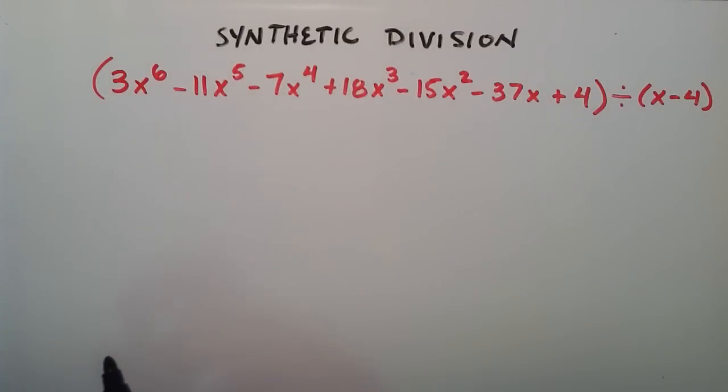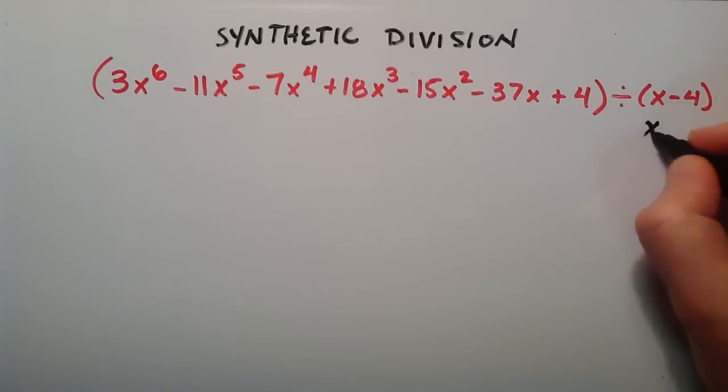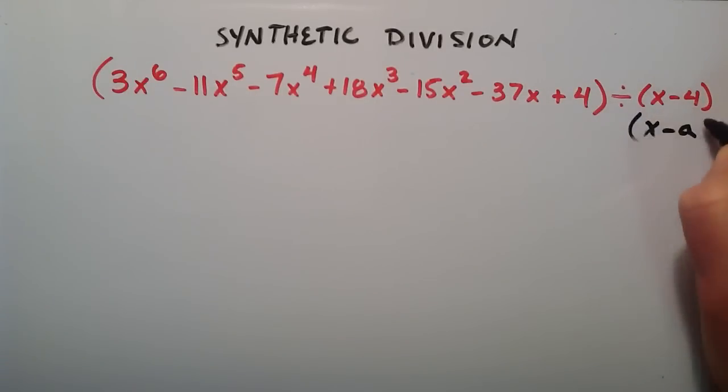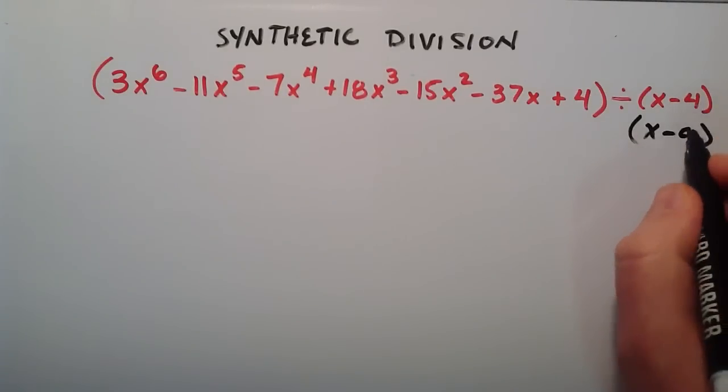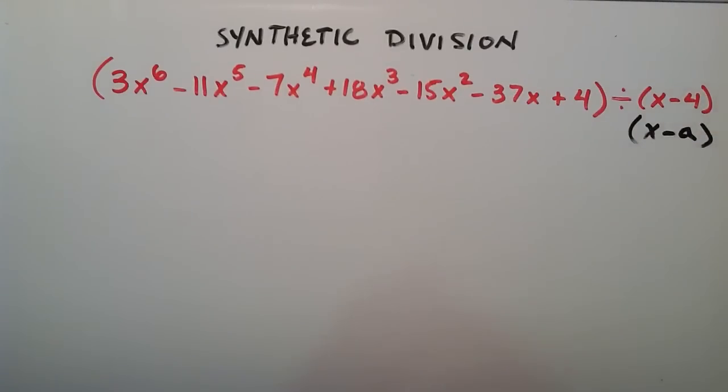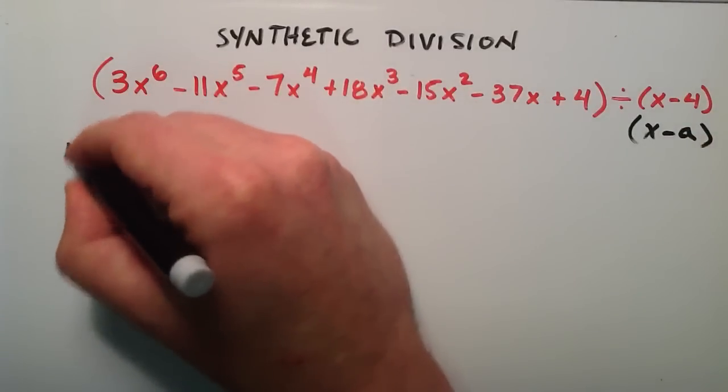And basically, with the synthetic division method, we need to be dividing by a polynomial in the form x minus a for this to work. And so in this case, our a is going to be equal to the number 4. So basically what we do is we take our a term and we write it out front here.